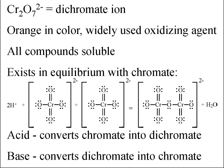Dichromate has the formula Cr₂O₇²⁻. This ion is orange in color and is widely used as an oxidizing agent. In contrast to chromates, all dichromates are soluble. Dichromate is a dimer of two chromates formed by sharing an oxygen atom. These two ions exist in equilibrium: adding acid converts chromate into dichromate, while adding base removes the hydrogen ion and shifts the equilibrium back toward chromate.